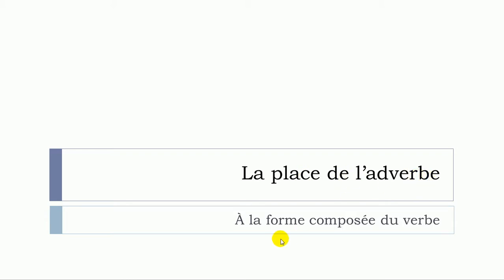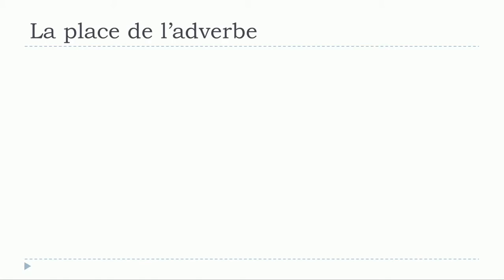We will focus on this video on what we call une forme composée de verbes. If you're thinking about the passé composé, all these composed tenses where you've got two parts — first you get avoir or être, and then the second part is le participe passé. We'll see where we should put the adverb when we've got this type of structure.